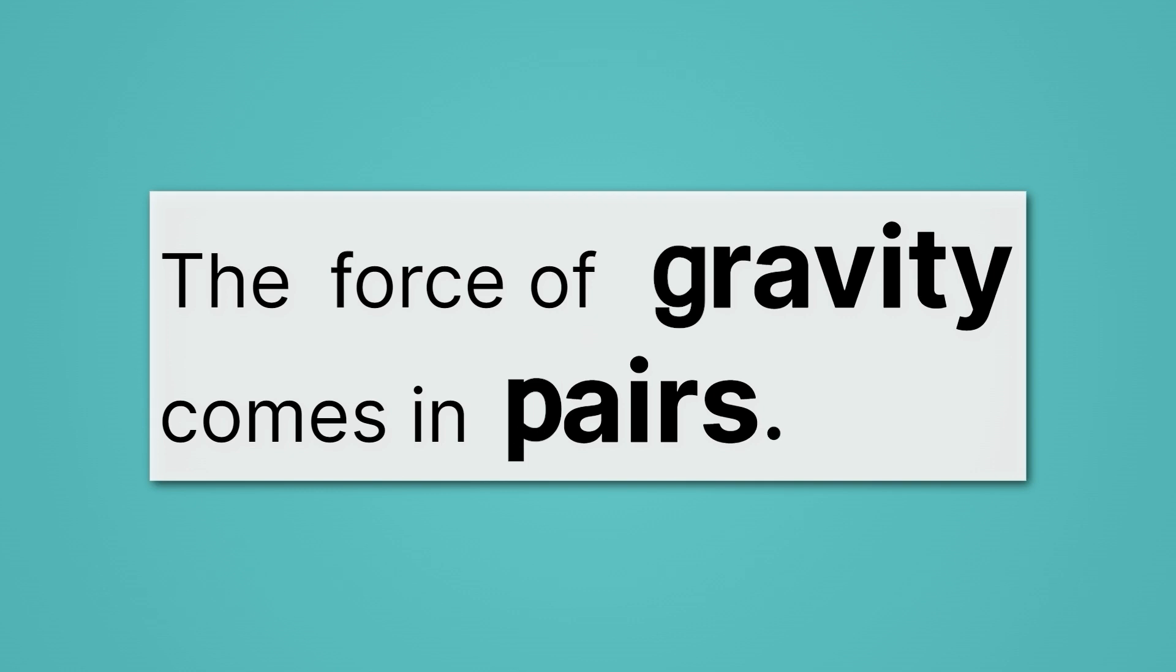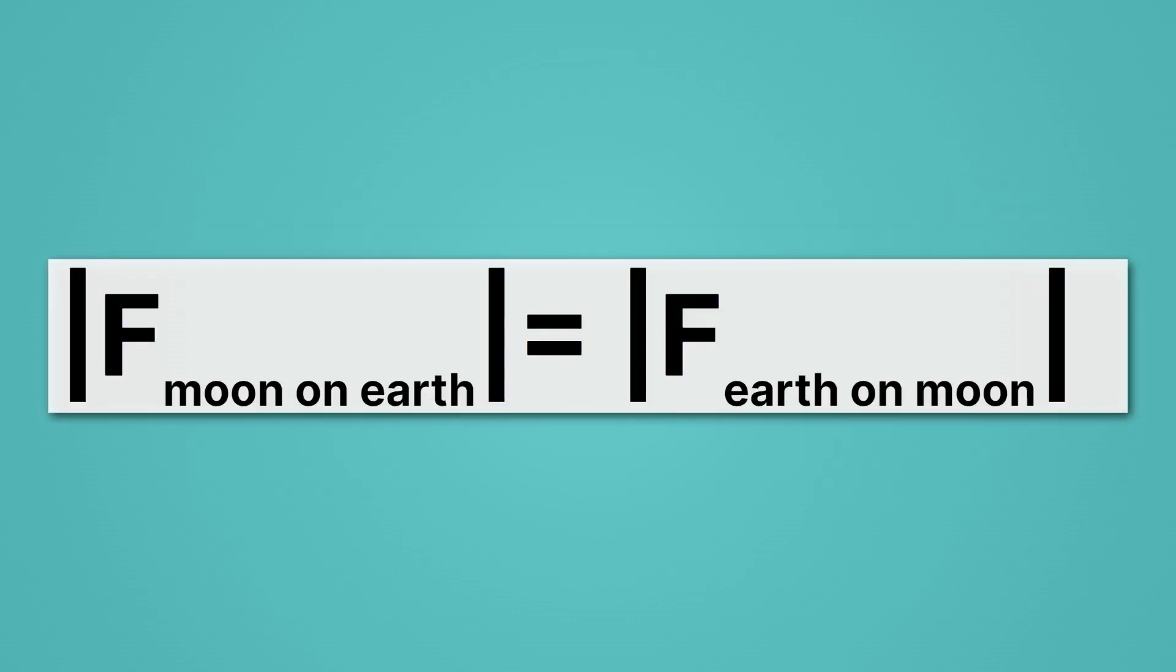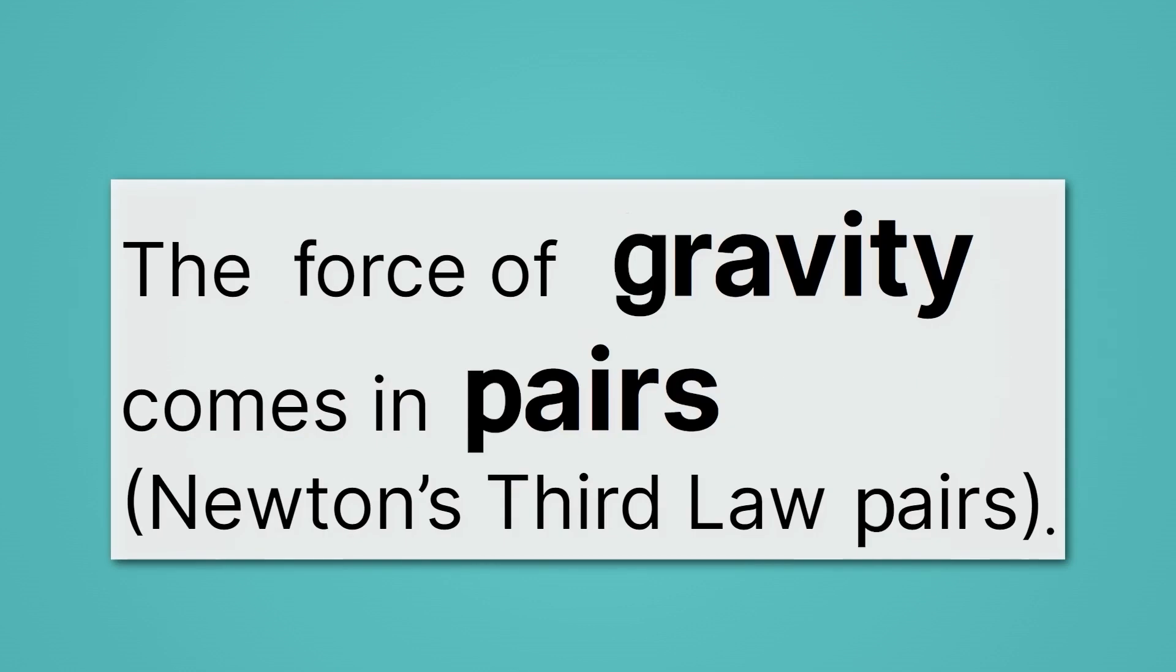Both masses are attracted to each other. And here's the thing. They're actually exactly equal in magnitude. So we can say that the force of the moon on the Earth is exactly equal to the force of the Earth on the Moon. If this looks familiar, it's because this is a Newton's third law pair. So the force of gravity comes in pairs, and they're Newton's third law pairs.